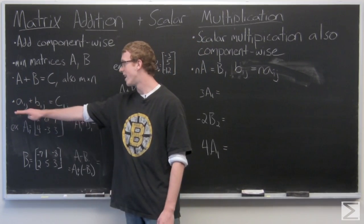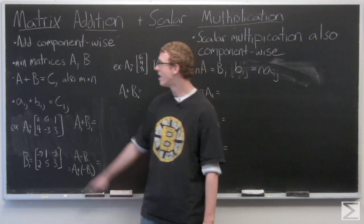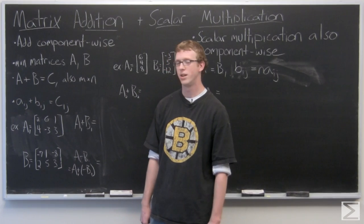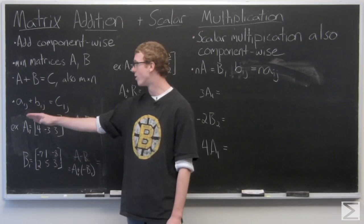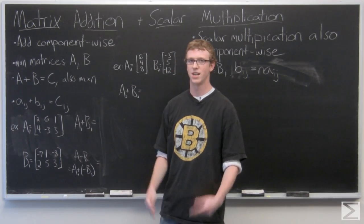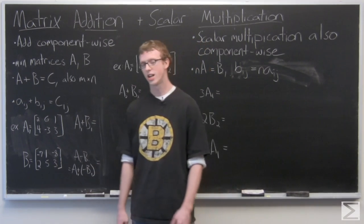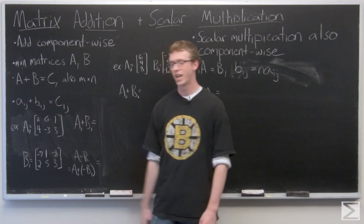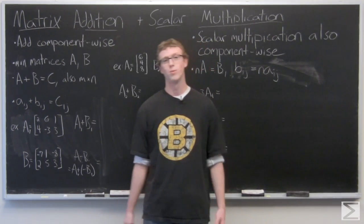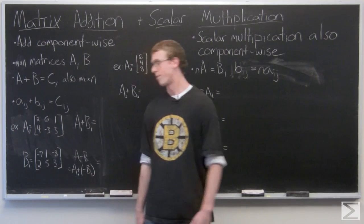And as I said, AIJ plus BIJ equals CIJ, where AIJ denotes the number in matrix A in the i-th row in the j-th column. Same with B, and as you can see they add together component-wise to get CIJ. Because of this, you can't add matrices that are different sizes. So if someone asks you to add a 2 by 3 to a 3 by 2, that's not possible.